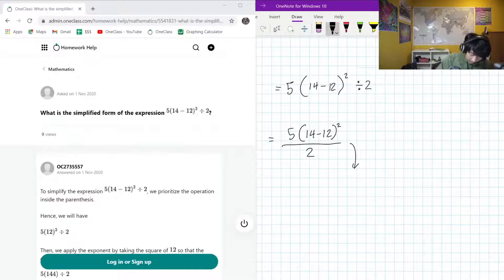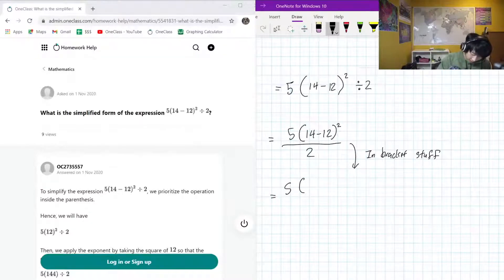So the first thing that we want to do is address the in-bracket stuff. We know that the in-bracket stuff, we have 14 minus 12, that's going to be well, 14 minus 12 is just 2. So we have 2 squared over 2.